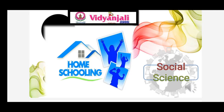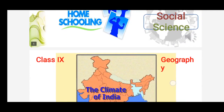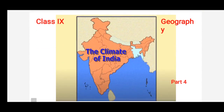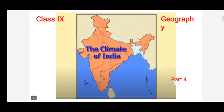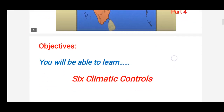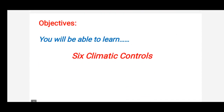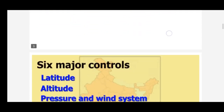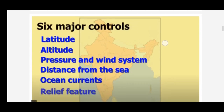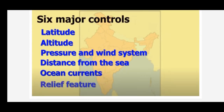Good morning children. Welcome back to our geography class. We are discussing about the climate of India. In this chapter, in the last class, we have discussed about the climatic controls — that is the third climatic control, which is pressure and wind system. In today's class, you will be able to learn about the distance from the sea, ocean currents, and relief features.